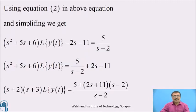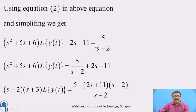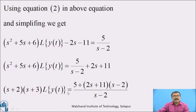Using the initial conditions from equation 2 and simplifying, we get (s² + 5s + 6)·L{y(t)} − 2s − 11 = 5/(s − 2). That is, (s² + 5s + 6)·L{y(t)} = 5/(s − 2) + 2s + 11. The coefficient s² + 5s + 6 factors as (s + 2)(s + 3), so (s + 2)(s + 3)·L{y(t)} = [5 + (2s + 11)(s − 2)] / (s − 2).